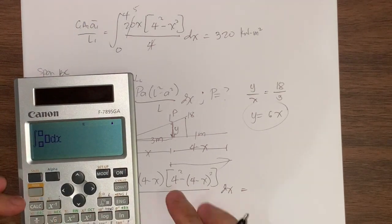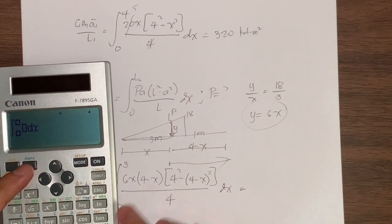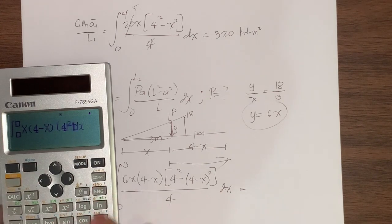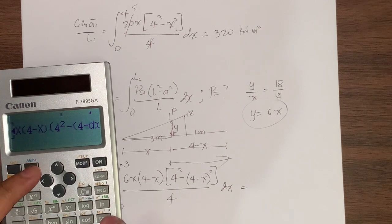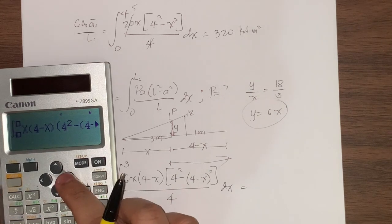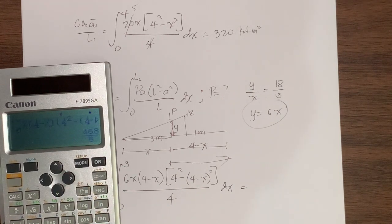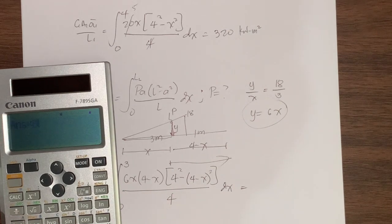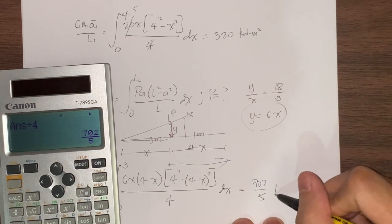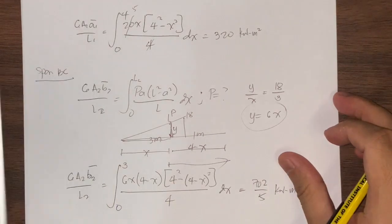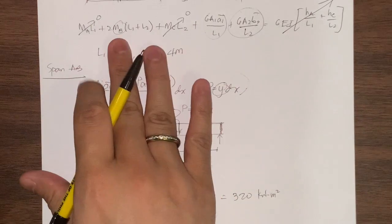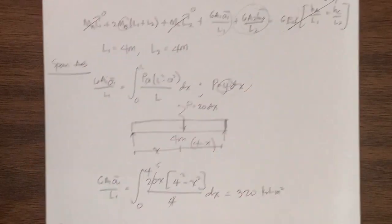Let's use our calculator again. I'll take out the 6 over 4 later. We have the integral of alpha x times 4 minus alpha x times 4 squared minus the quantity 4 minus alpha x squared. The limit is from 0 to 3 only. Remember I didn't include 6 over 4, so times 6 divided by 4, that gives 702 over 5. Again, the unit is kilonewton meter squared. Going back to the three-moment equation, this is what remains.